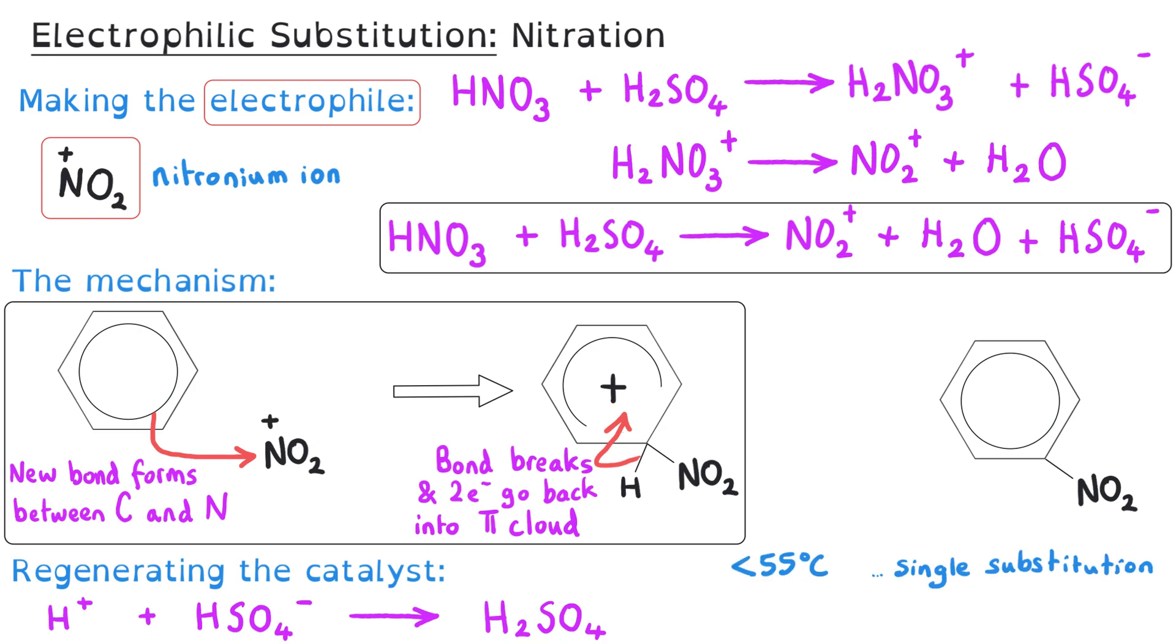If we want to make sure that we only add one nitro group to our benzene, we need to make sure when we're warming it up in this reaction that we keep the temperature below 55 degrees C. If we go above 55 degrees C, the temperature rise means that multiple substitutions occur, and so we get more than one nitro group joining the benzene ring and we could get as many as three being added.